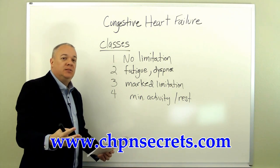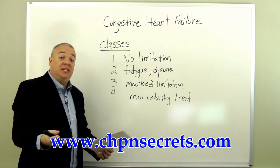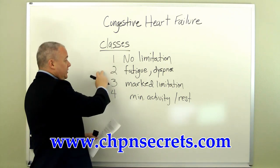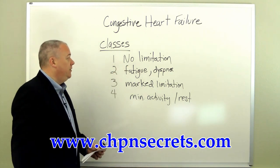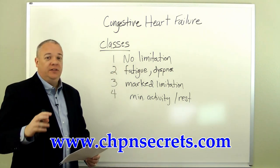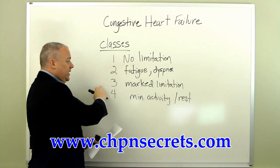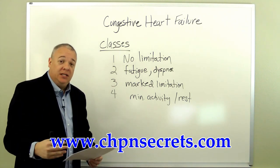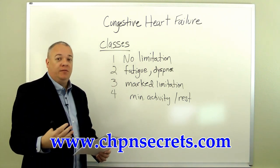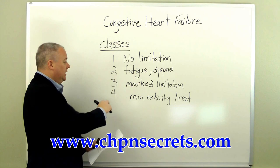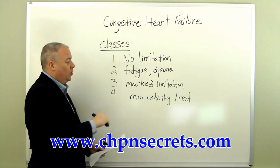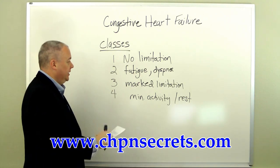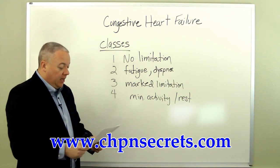To summarize: Class 1 — doing normal activity they might experience some symptoms but there's no limitation; Class 2 — normal physical activities result in fatigue and dyspnea; Class 3 — strongly marked limitations in their ability to do normal physical activity; Class 4 — they experience symptoms even when at rest.